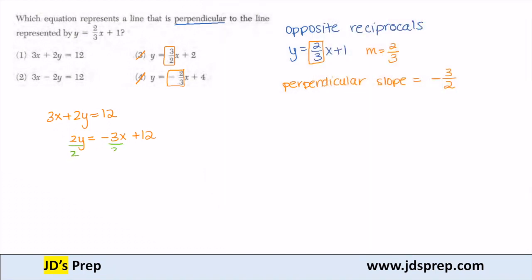Divide by 2, divide by 2, divide by 2. So for option 1, y is equal to negative 3 over 2x plus 6.